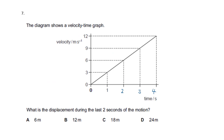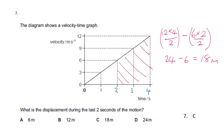Question seven: the diagram shows a velocity-time graph. What is the displacement during the last two seconds of the motion? It's the area under the graph between two and four seconds — the pink shaded area. You can use the trapezium method, or calculate the larger triangle minus the smaller triangle: 12 times 4 over 2 = 24 meters, minus 6 times 2 over 2 = 6 meters, giving 18 meters — answer C.